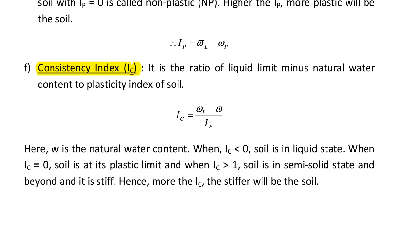When consistency index equals 0, the soil is at plastic limit. When consistency index is greater than 1, the soil is in semi-solid state. The more the consistency index, the stiffer will be the soil.